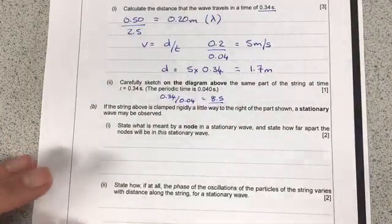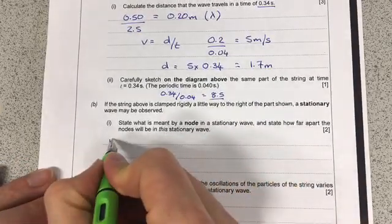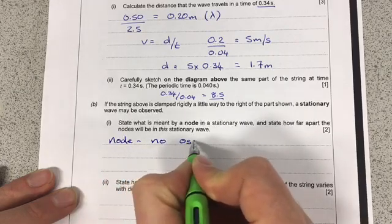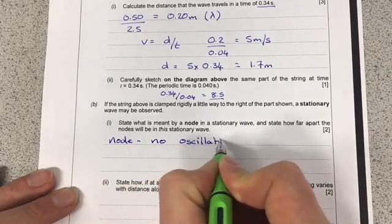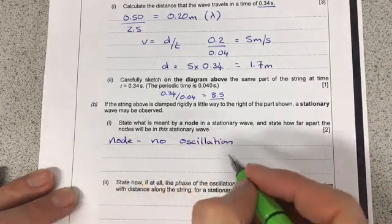Now, my next question, we've got a little bit of recall here. So, what is meant by a node? A node is no oscillation. There's no movement at that point on the wave. And how far apart will the nodes be?